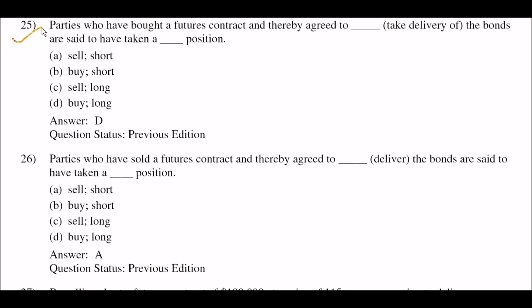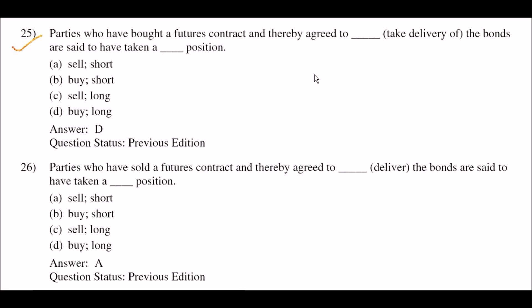Next question: parties who have bought a future contract and thereby agree to [buy / take delivery of] the bonds are said to have taken a [blank] position — option A: sell and short respectively; option B: buy and short respectively; option C: sell and long respectively; option D: buy and long respectively. The right answer is option D: buy and long. Parties who have bought a future contract agree to buy and take delivery of the bonds, taking a long position.